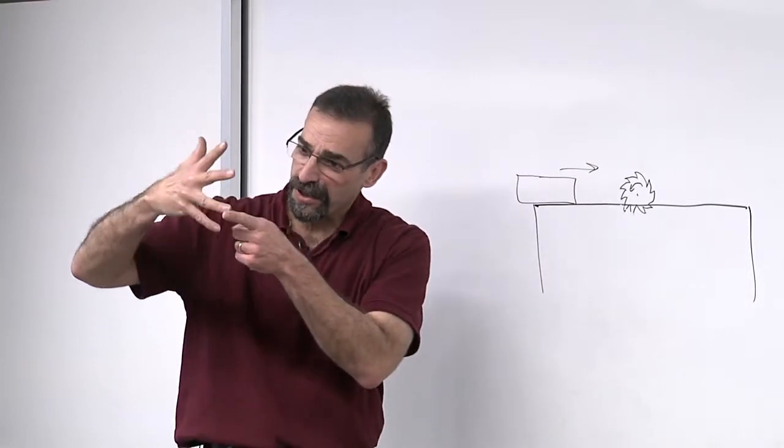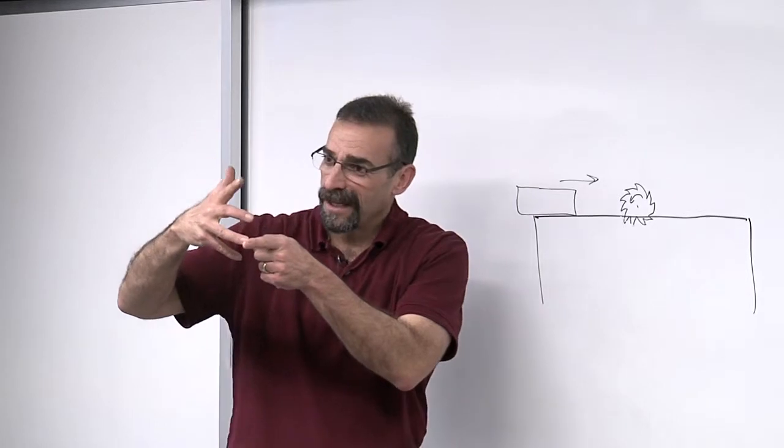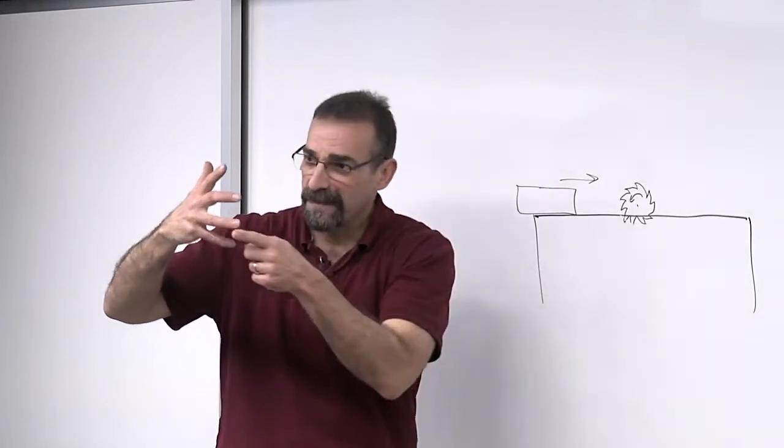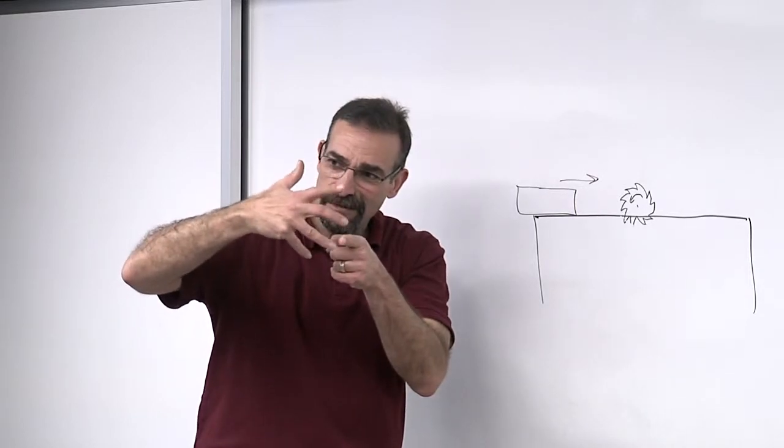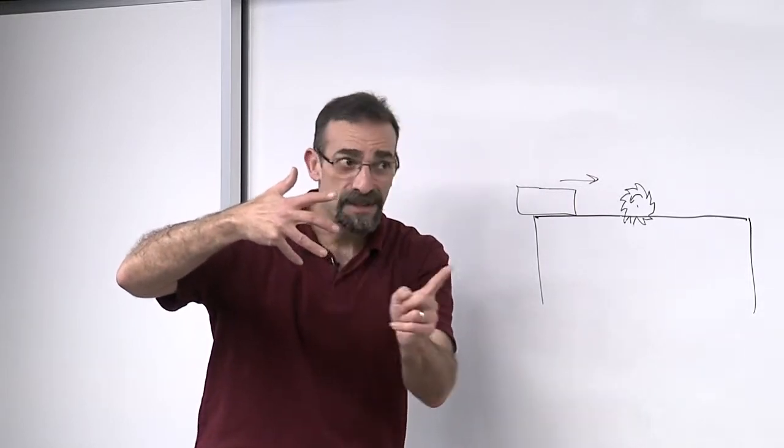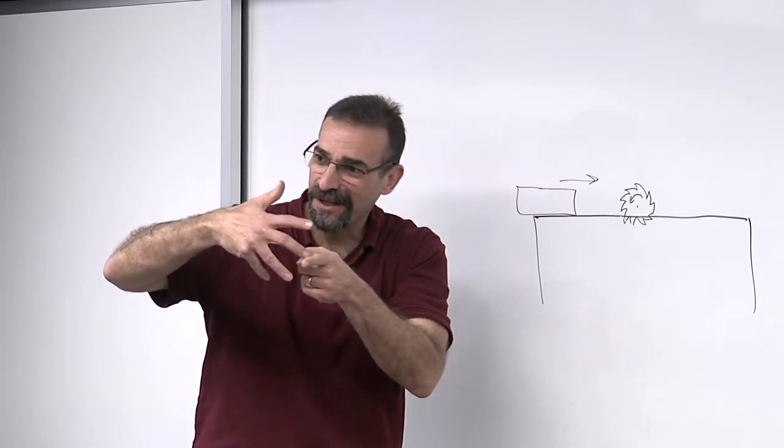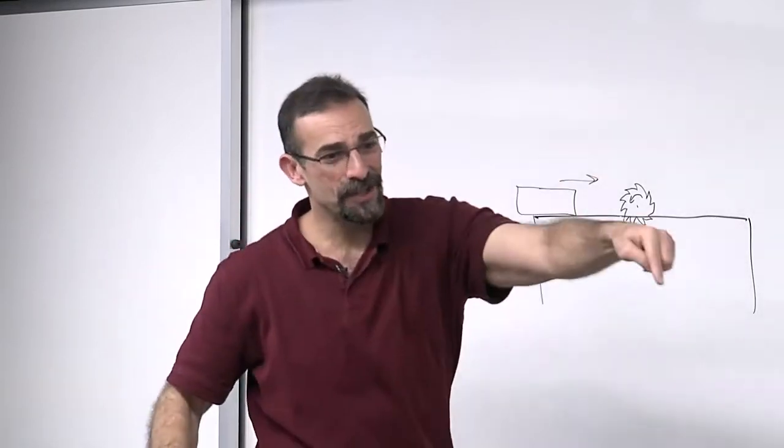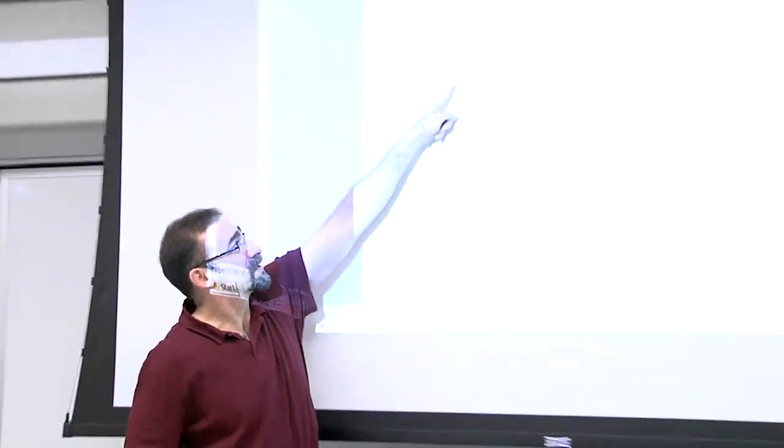And the first tooth, the first little tooth on the saw hits your finger, and the potential starts to drop. And then for a split second, nothing is touching your finger, and the potential starts to go back up. And then the second tooth hits your finger, and the potential goes back down again.